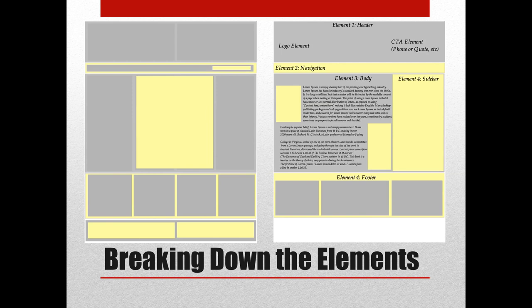Now you'll start to see the website the way it comes together. On the left-hand side, this is called a dual sidebar — sidebar left, sidebar right, body center. On the right-hand side, you'll see element number three, which is the body; element number four, sidebar; element number one, header; element number two, navigation; element number three, footer.